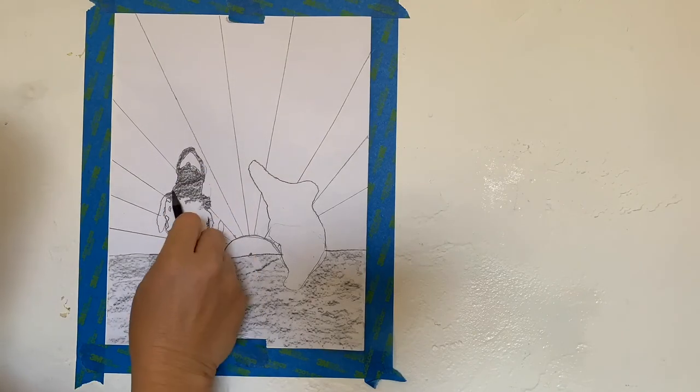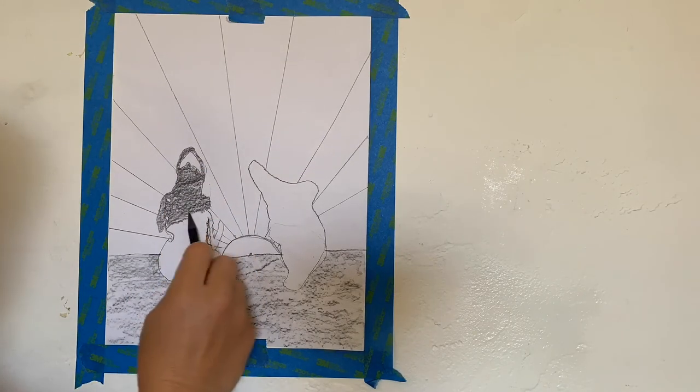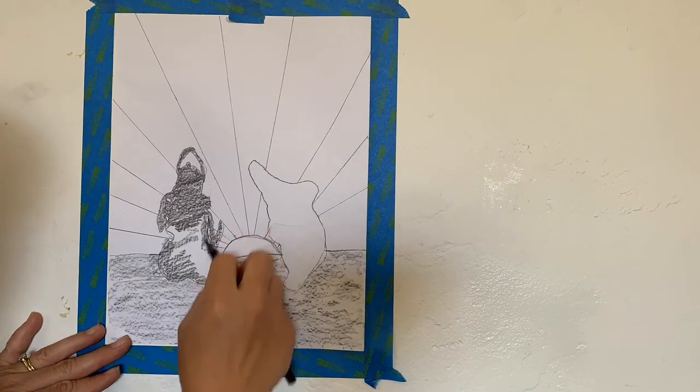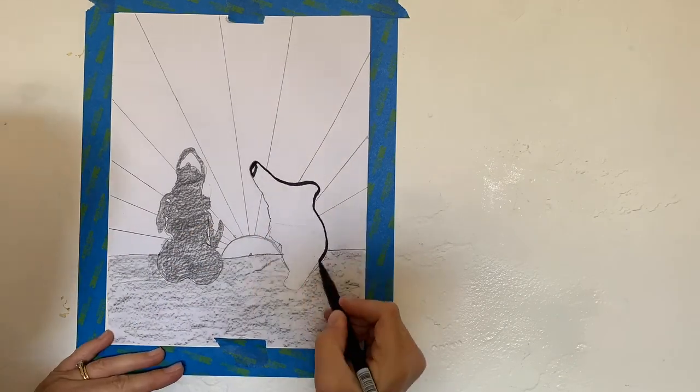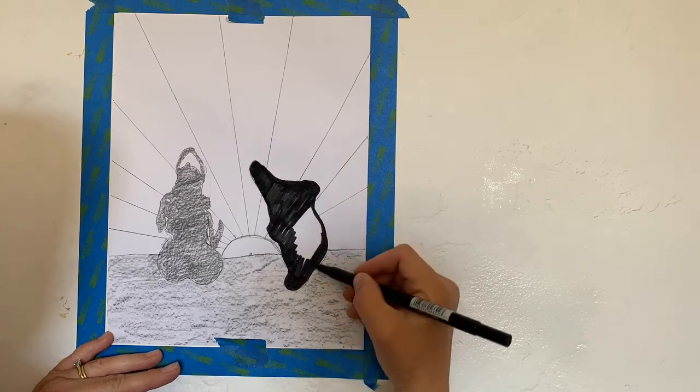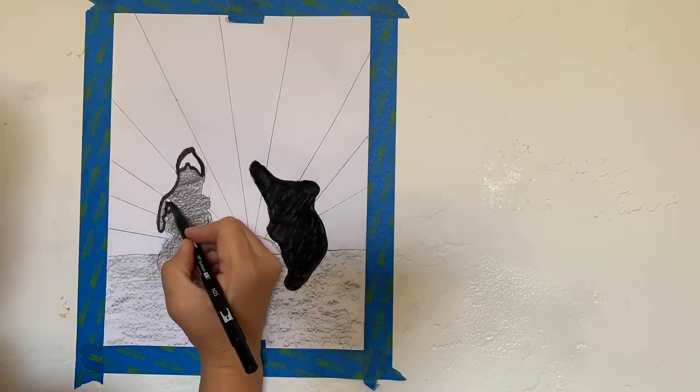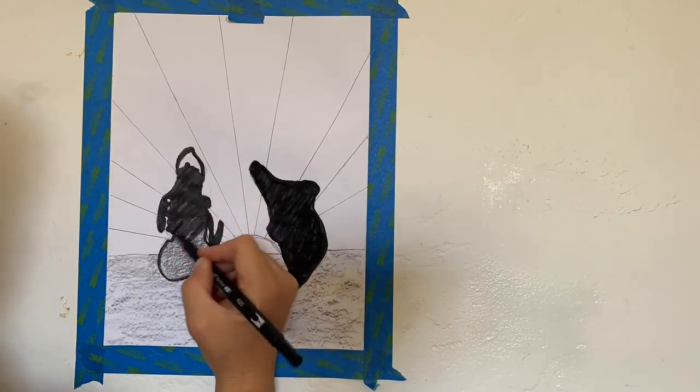With a dark colored pencil, crayon, or marker, begin shading in the shadows we've outlined earlier. Positive space refers to the main focus of a picture, just like our outline shadows.